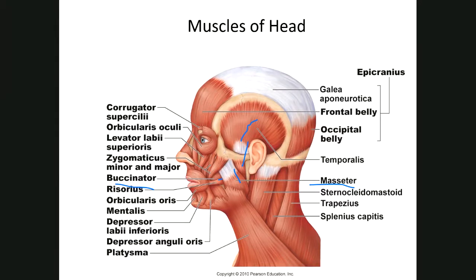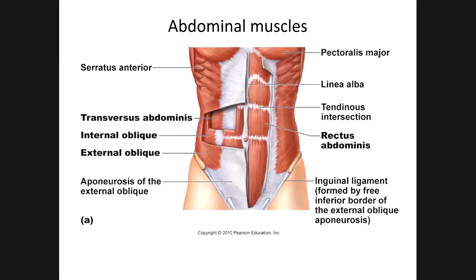Also muscles involved in eating and swallowing that are not pictured here include the ones that move the tongue — genioglossus and hyoglossus — and for swallowing, the suprahyoid and infrahyoid muscles. We won't worry about those right now.